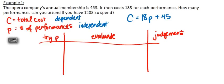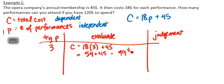We will start with trying P of 3. If we went to 3 performances, the total cost will be $18 times 3 performances, plus $45. 18 times 3 is 54, plus $45 makes it $99. We have $120 to spend, so I compare $99 to my total, and I see I'm a little bit low. So I could try a higher number.